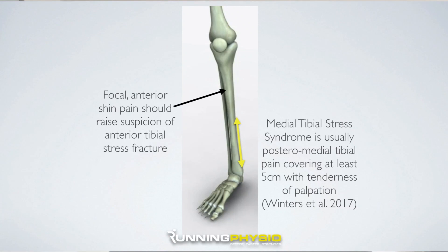However, if the symptoms are more anterior — and this can occur at various places along the anterior tibia, sometimes more proximal than medial tibial stress syndrome — it should raise suspicion of an anterior tibial stress fracture. This is something we need to be aware of because it's considered a high-risk stress fracture and in some cases will progress to a true fracture of the tibia. Key point: if you're seeing anterior symptoms that are more focal and specific to a certain spot, that should lean you towards anterior tibial stress fracture. If they're more medial and diffuse along the surface of the bone, that's more consistent with medial tibial stress syndrome.